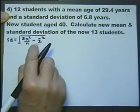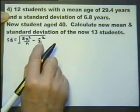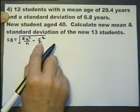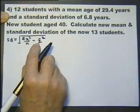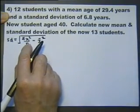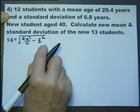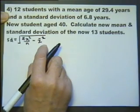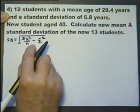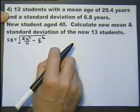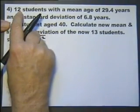So to work out standard deviation, we need to know the mean and what the squares add up to. I don't know if that really helps me much, because I've got to do this for the new group of 13. So I think what we'd better do is think about the old group of 12 and see what we can work out.